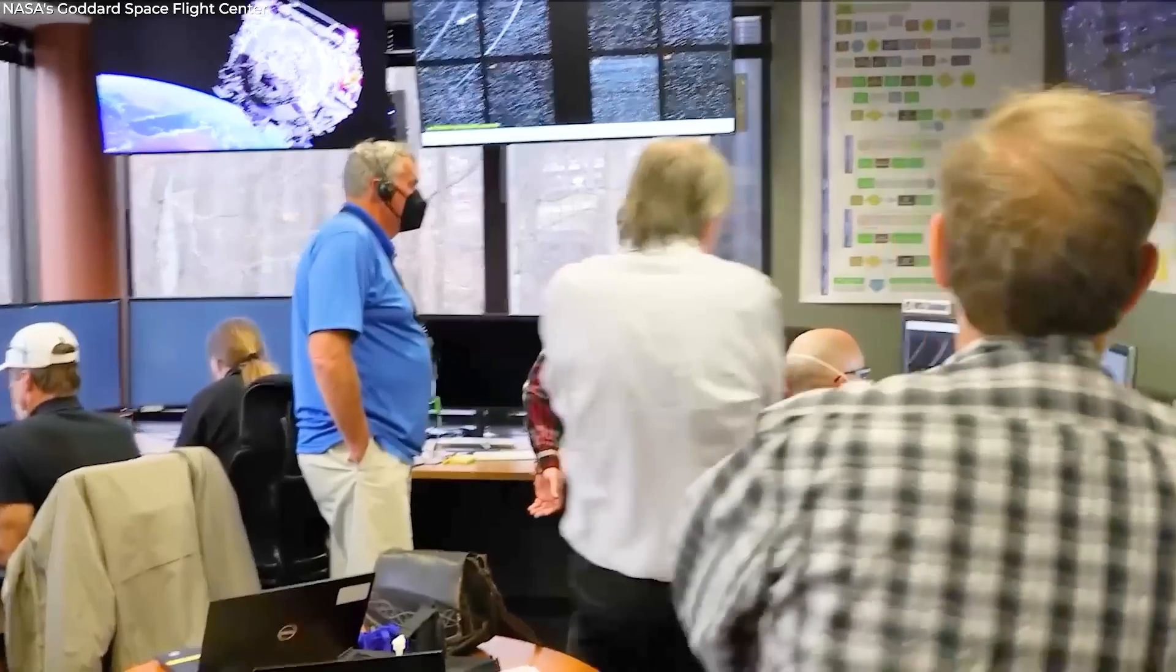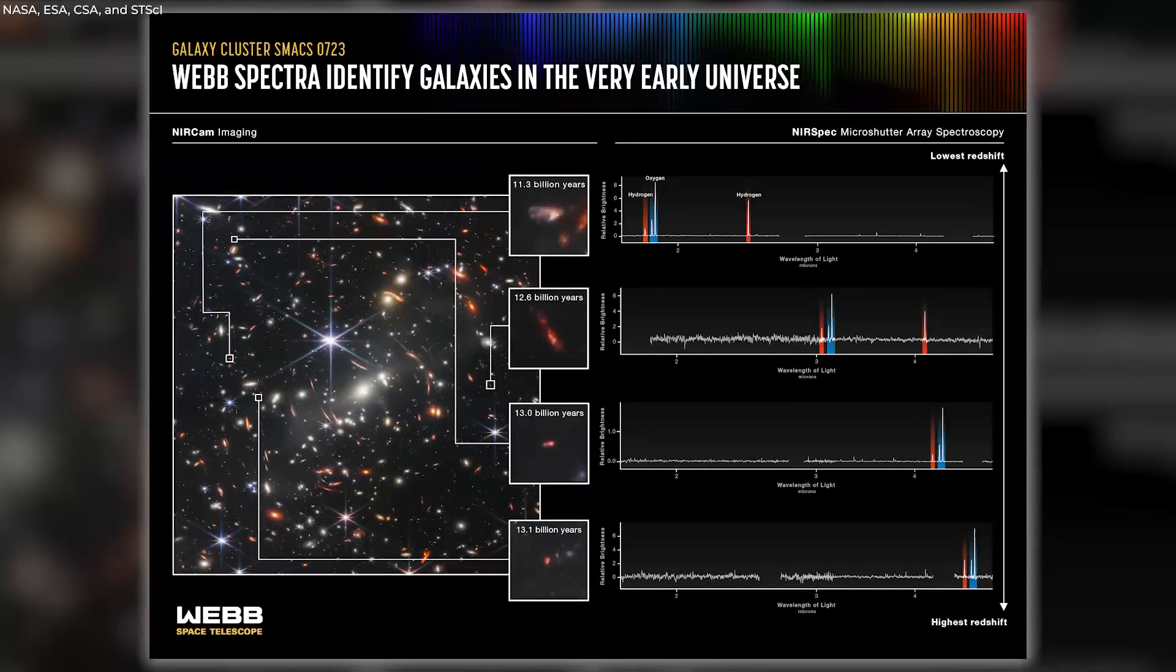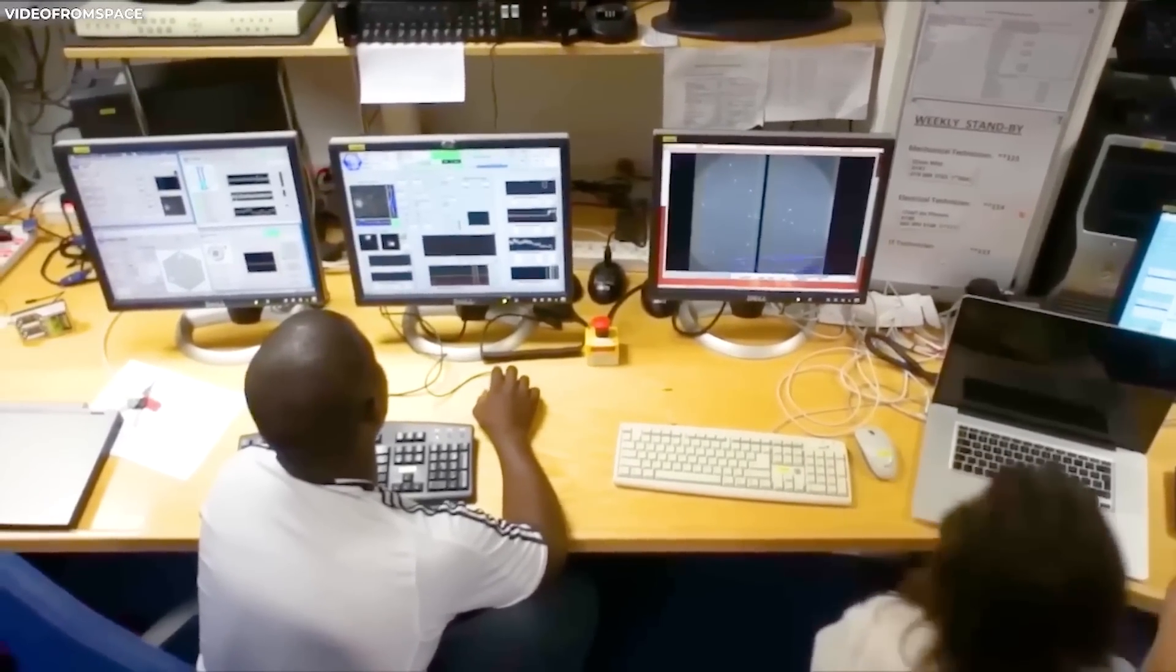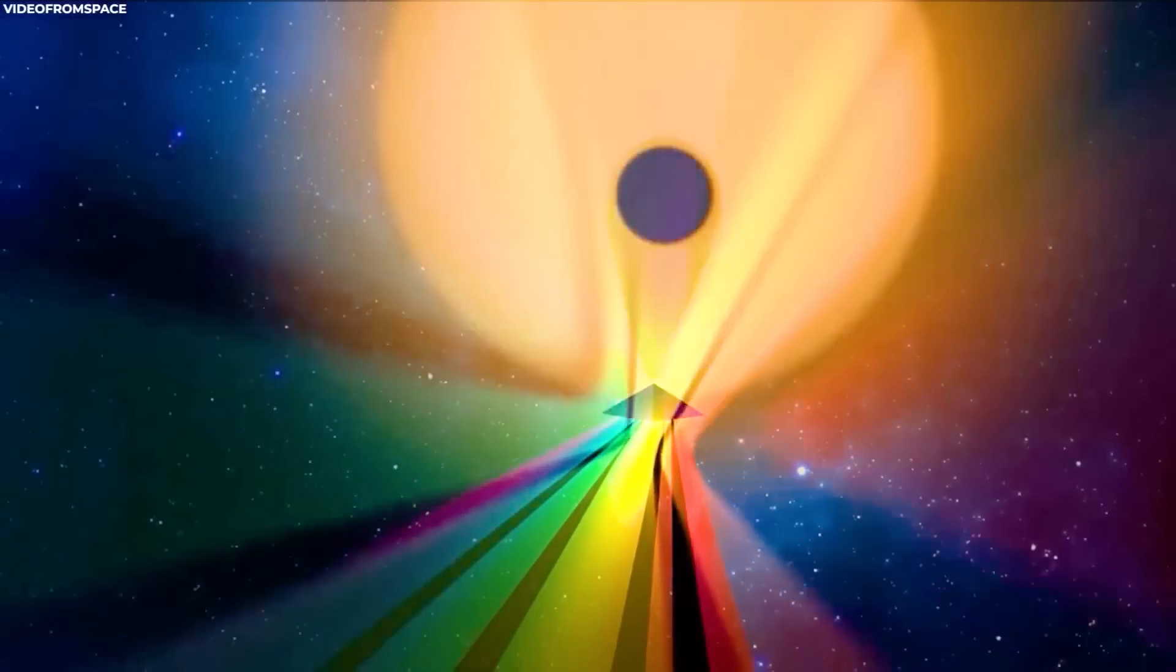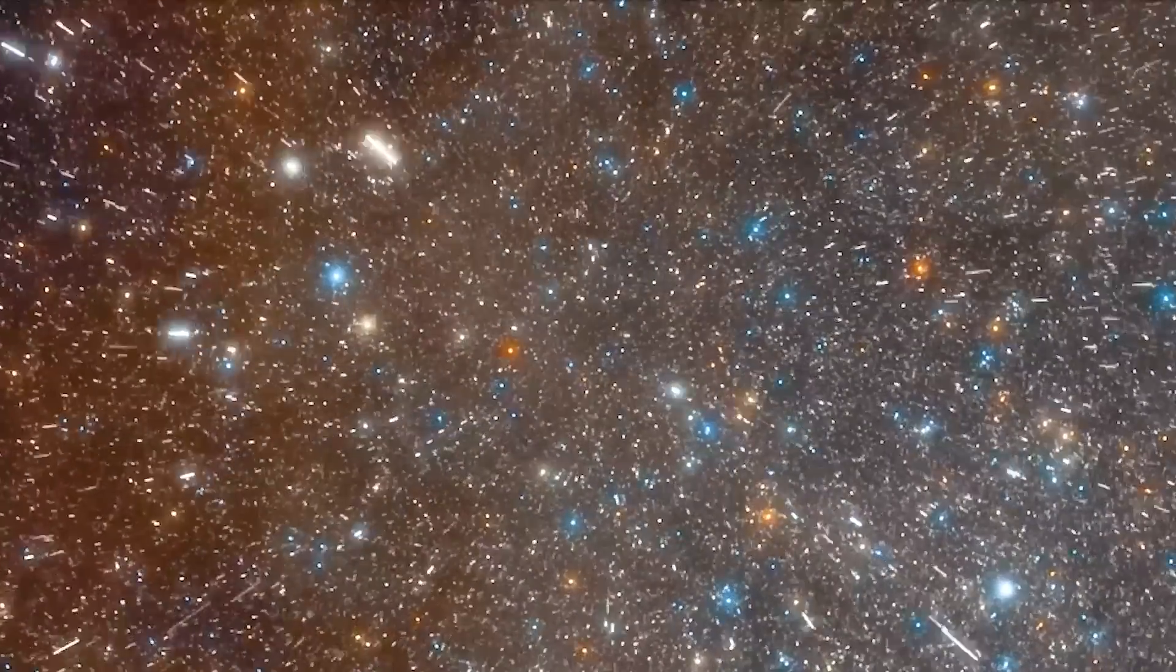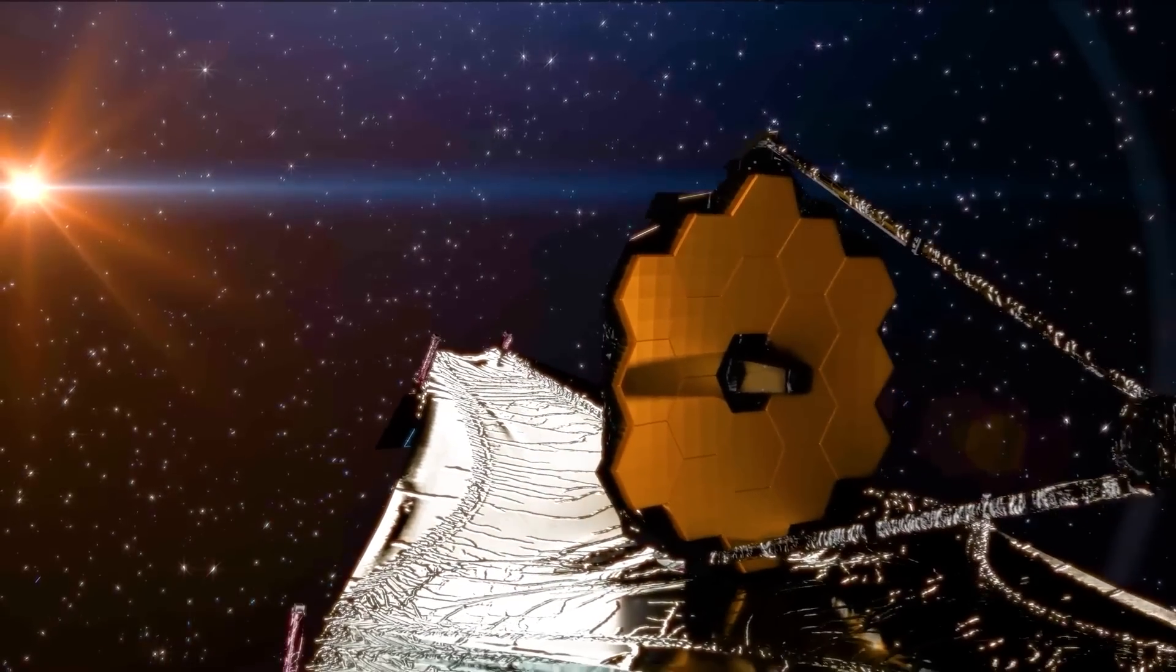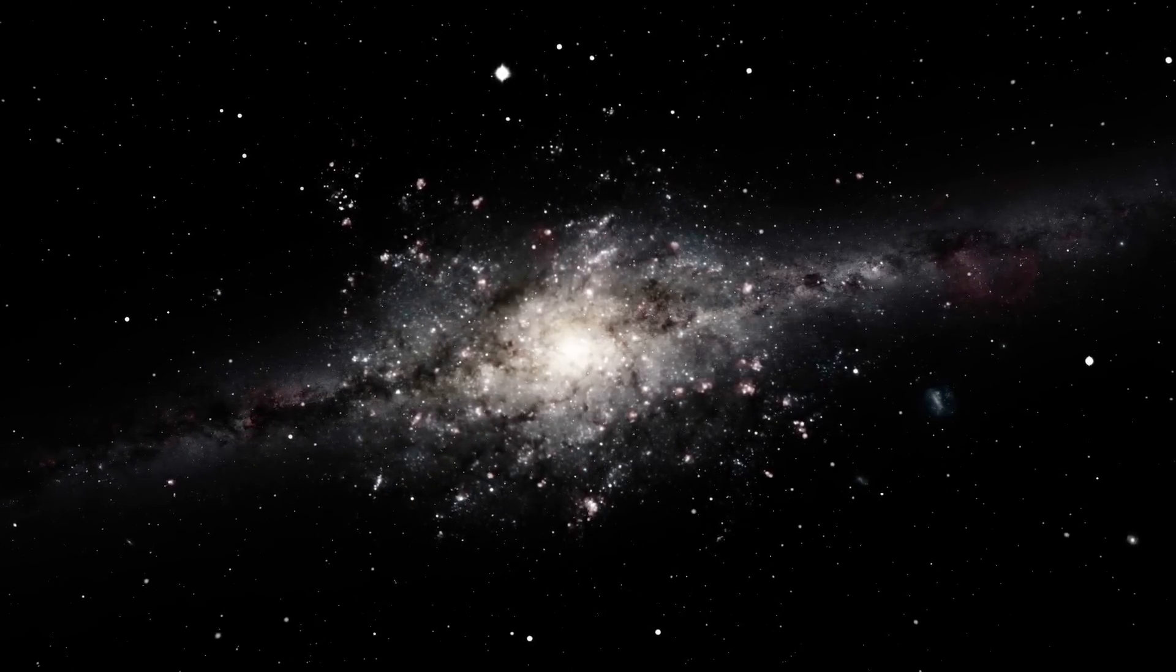The spectra of those galaxies, or the information that is obtained when the telescope divides incoming light into distinct colors, were what astronomers were eagerly waiting for in order to fully understand the early cosmos. James Webb began returning galactic spectra in earnest at the end of last year, and these are important for two reasons.